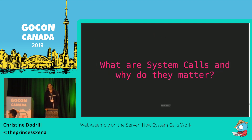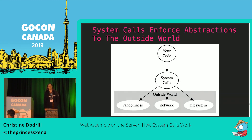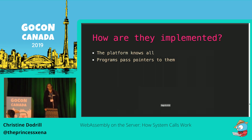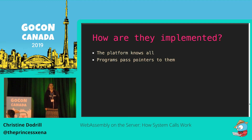Something you might be asking yourself is: what are system calls? Why do they matter? System calls are basically the abstractions that enforce access to the outside world. Your code has to go through system calls to access things like randomness, the file system, or the network. Generally, they're implemented by the platform that the code is running on. The platform knows everything about your program more than your program is allowed to know, and your program passes a pointer into its memory to do stuff.